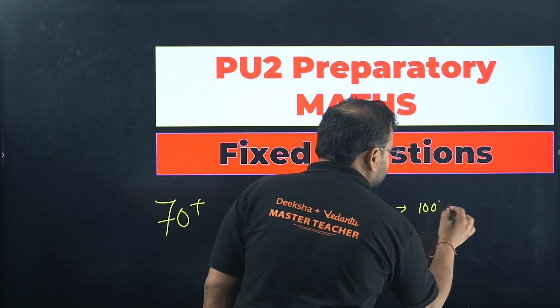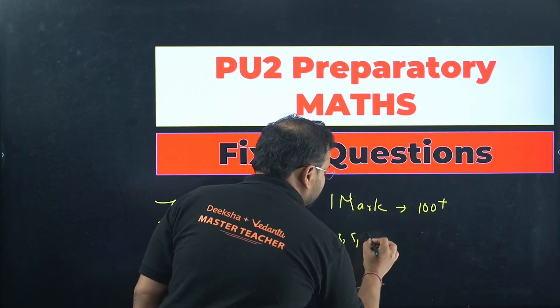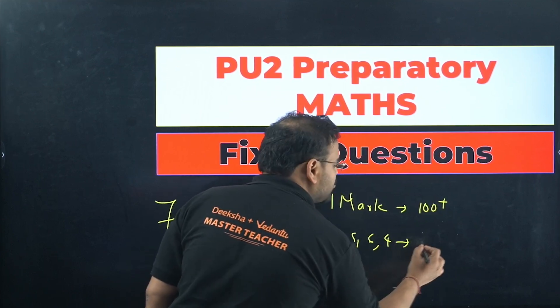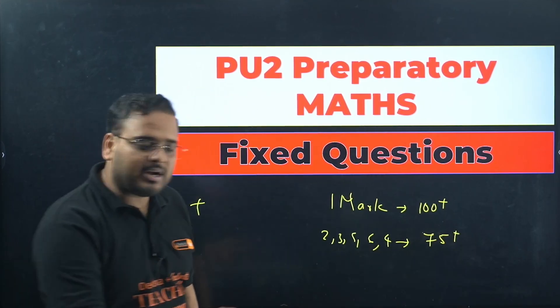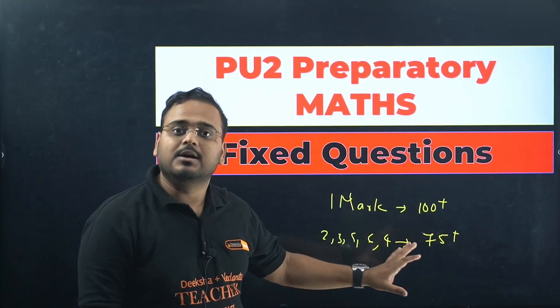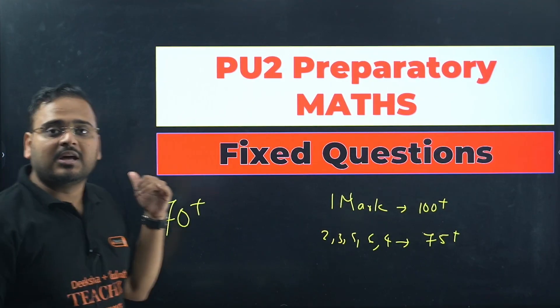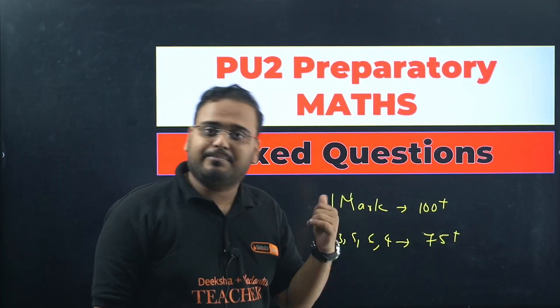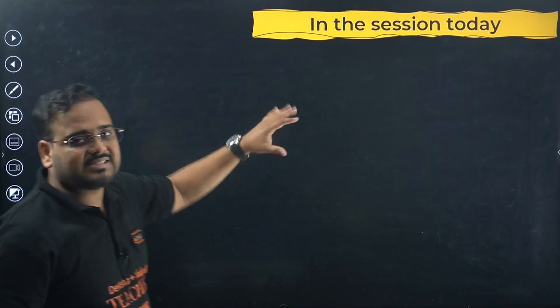I've given you close to 100 plus questions of MCQs, and I've given you two, three, five, as well as four and six markers close to 75 plus questions. So if you solve them together it becomes close to 180 problems. I've given the solutions as well. Here this is a list of questions that you can go ahead and solve and practice to score 70 plus easily.